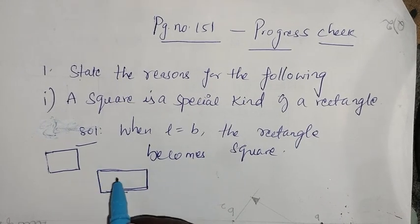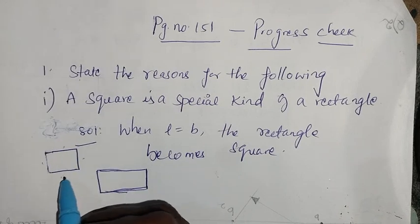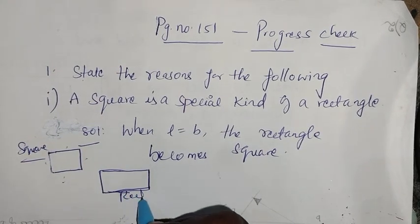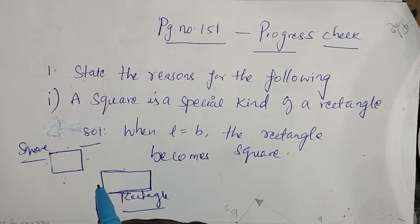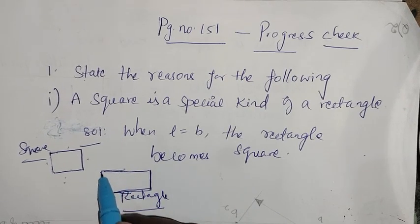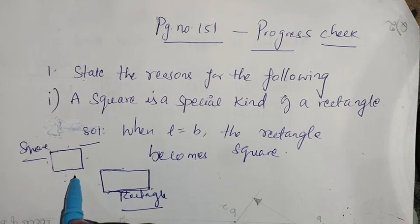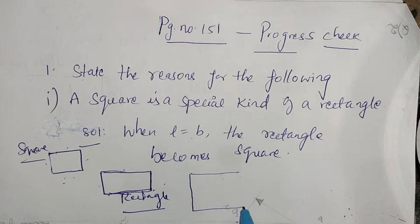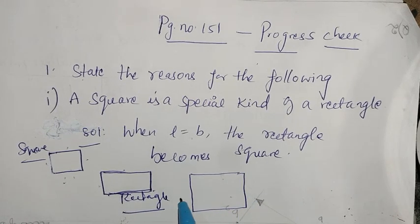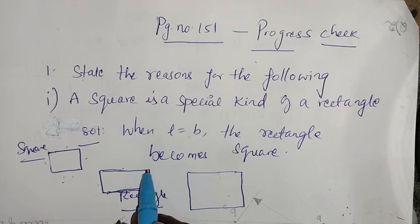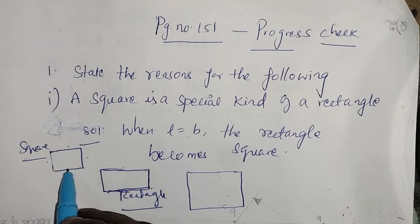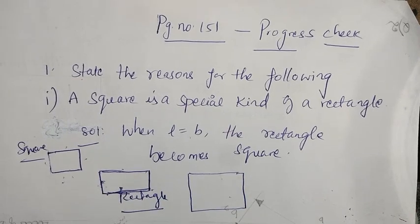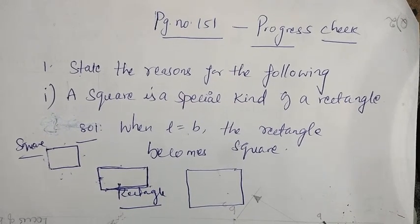When length equals breadth, length and breadth are all the same, the rectangle becomes a square. Because when length is equal to breadth, the rectangle becomes a square.